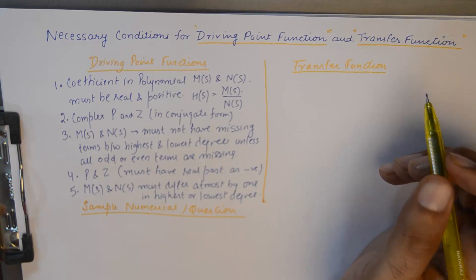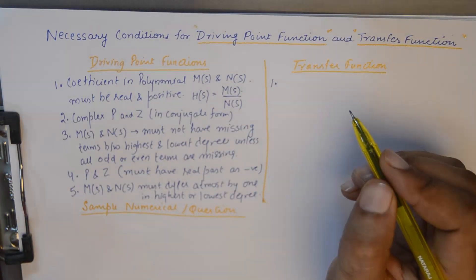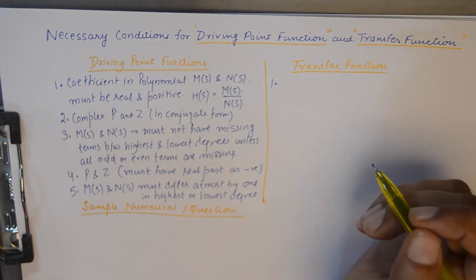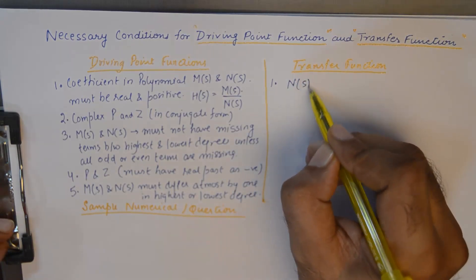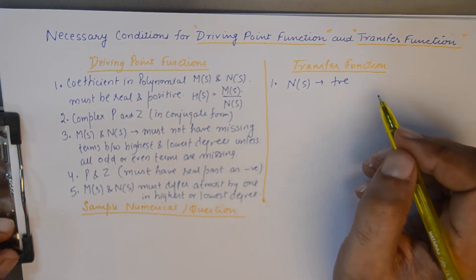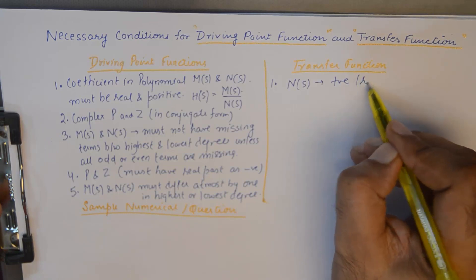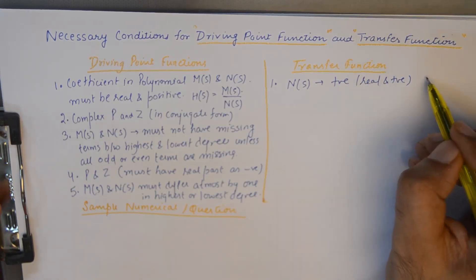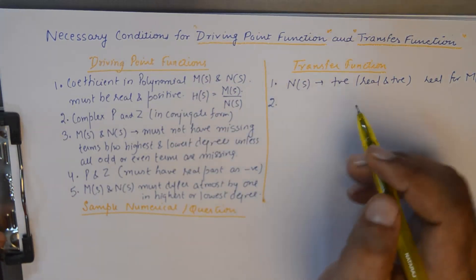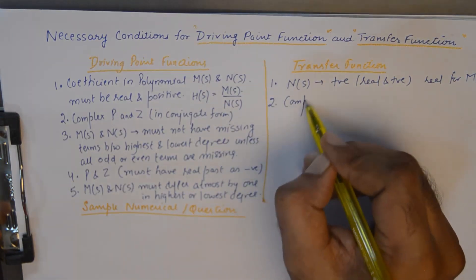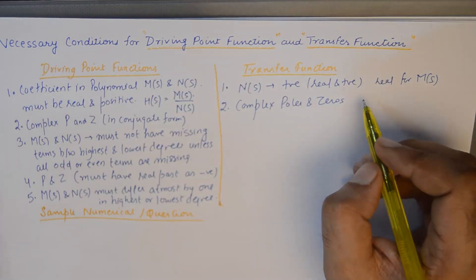Now we will talk about the necessary conditions for transfer functions. The first necessary condition is similar: the coefficients of polynomials M(s) and N(s) must be real and positive for N(s), but for M(s) you could have a negative coefficient — so it must be real and positive for N(s) and simply real for M(s). The second condition is also that complex poles and zeros must be conjugate.